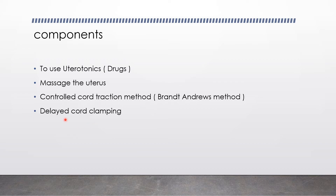You can use delayed cord clamping — you wait for 2 to 3 minutes. This helps the baby receive proper nutrition and prevents anemia. After delayed cord clamping, you proceed with the controlled cord traction, also known as the Brandt-Andrews method.